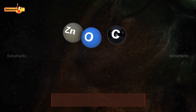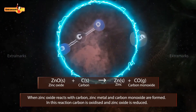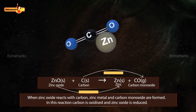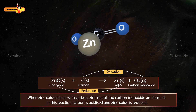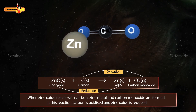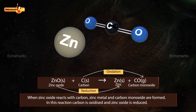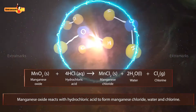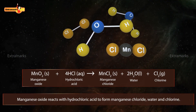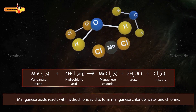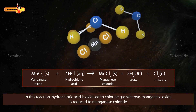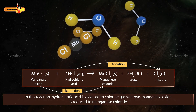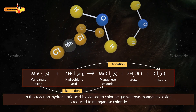Let's consider some more examples of redox reactions. When zinc oxide reacts with carbon, zinc metal and carbon monoxide are formed. In this reaction, carbon is oxidized to carbon monoxide and zinc oxide is reduced to zinc. Similarly, manganese oxide reacts with hydrochloric acid to form manganese chloride, water, and chlorine. In this reaction, hydrochloric acid is oxidized to chlorine gas, whereas manganese oxide is reduced to manganese chloride.